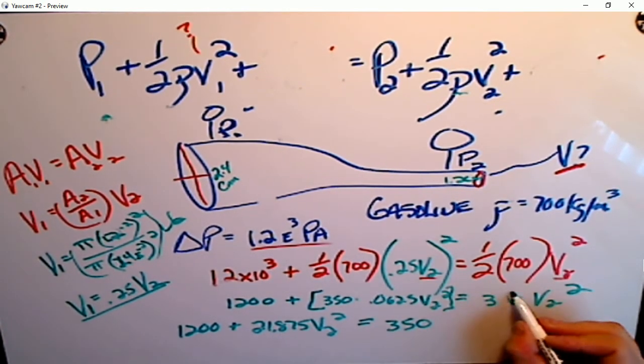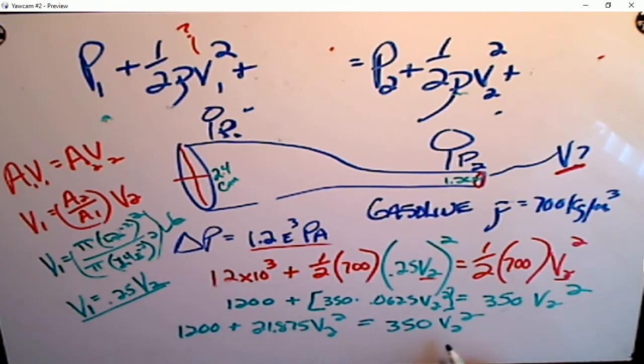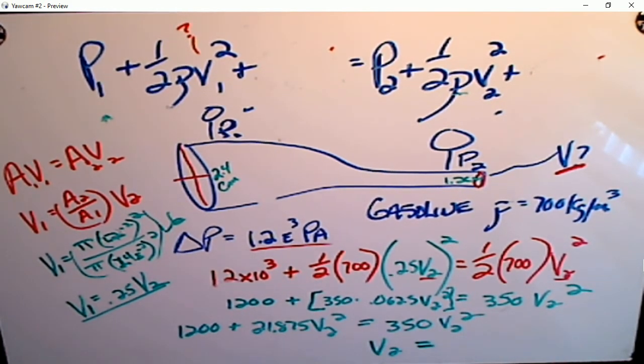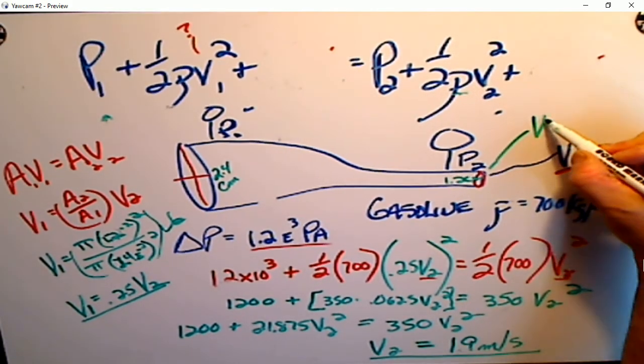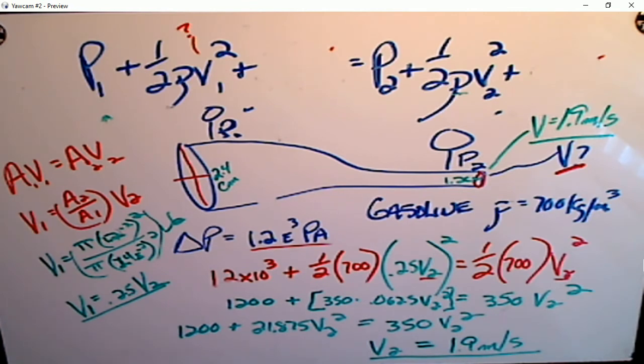I wrote that wrong there. And then you subtract it from that side, divide, and then take the square root. Very easy to solve this, right? What you would do is subtract 21.85 from 350, whatever that number is, divide 1200 by that number, and then take the square root to get rid of the square. And you're going to get 1.9 meters per second. This, the velocity here, 1.9 meters per second.